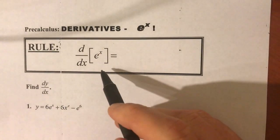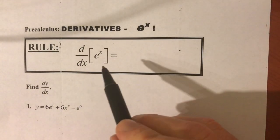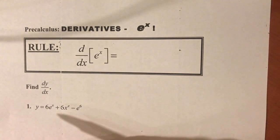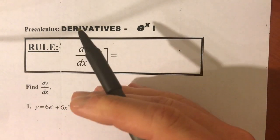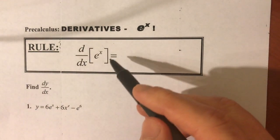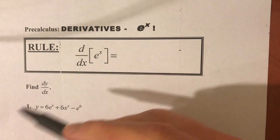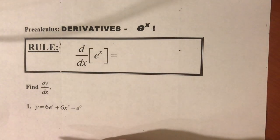We're taking the derivative of e to the x. An important distinction to make here is that you cannot use the power rule on this. The power rule is used for x raised to some constant. This is a constant raised to a variable. So you cannot use the power rule on this.